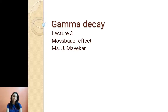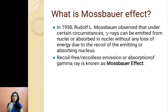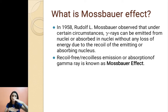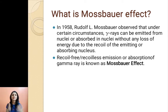Hello everybody, myself Jyoti and this is the third lecture on gamma decay. Today we are discussing the Mössbauer effect, or Mössbauer spectroscopy. Whenever we talk about spectroscopy, the first thing that should come to mind is the transition between two energy levels. In infrared spectroscopy we use infrared rays, in microwave spectroscopy we use microwaves. Similarly, in Mössbauer effect the source is gamma rays.